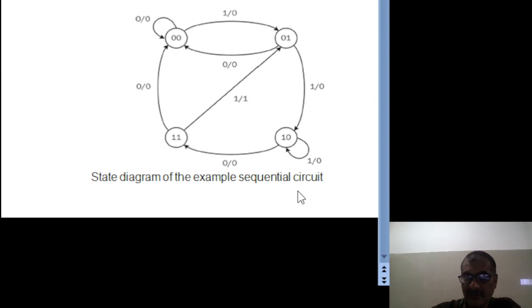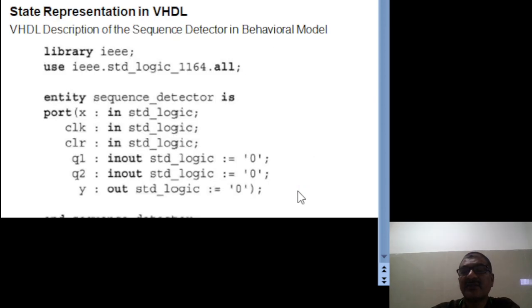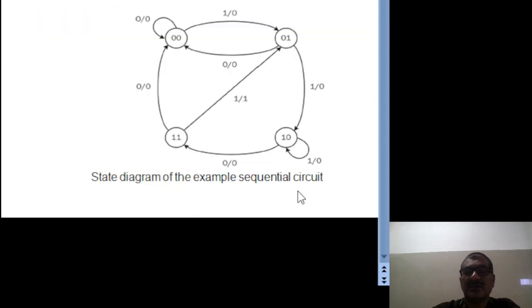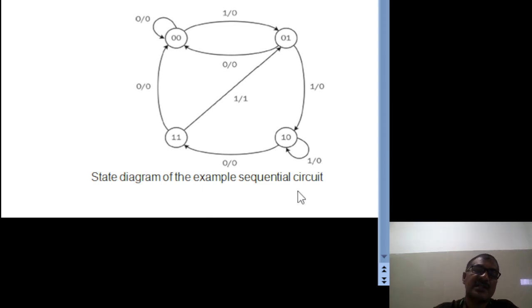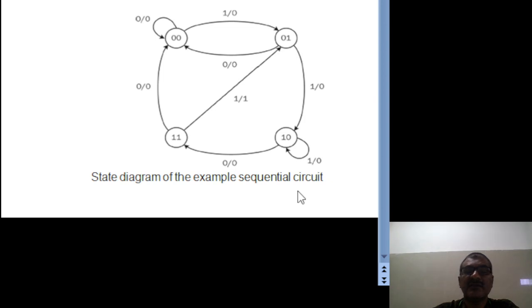So this is the state diagram representation. We have covered state table representation and state and output equation representation with reference to sequential circuits. In the next class, we will see how to represent these states using VHDL.